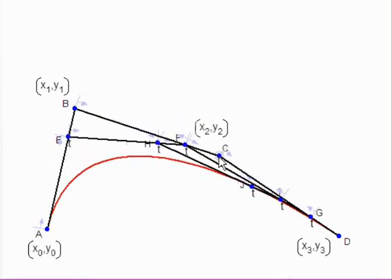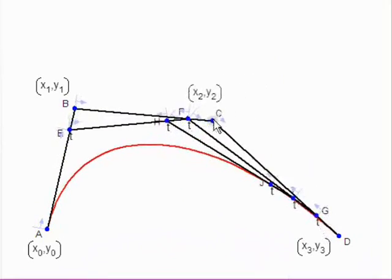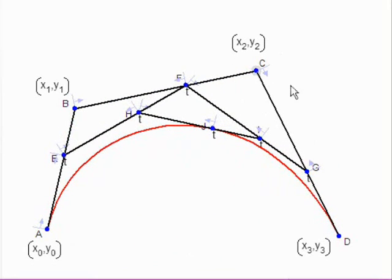If we drag the different points in the control polygon, we see that we get different varieties of the curve, of the spline. The spline kind of follows the control polygon.